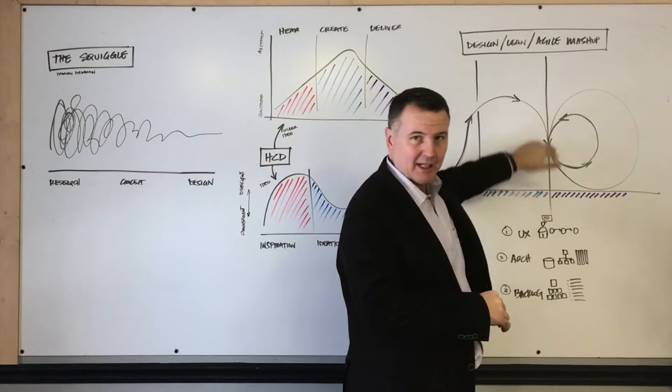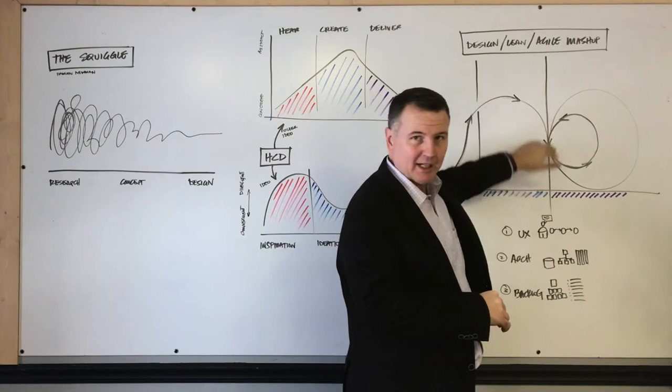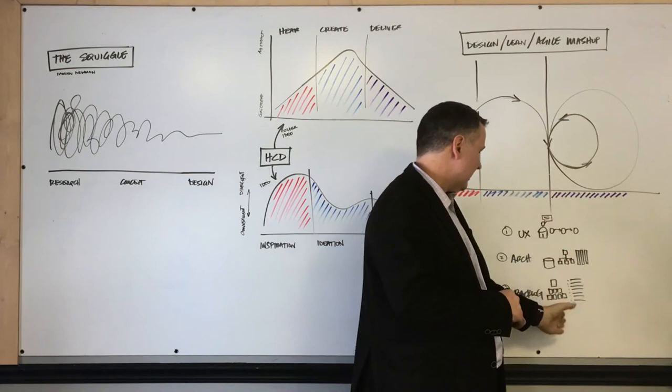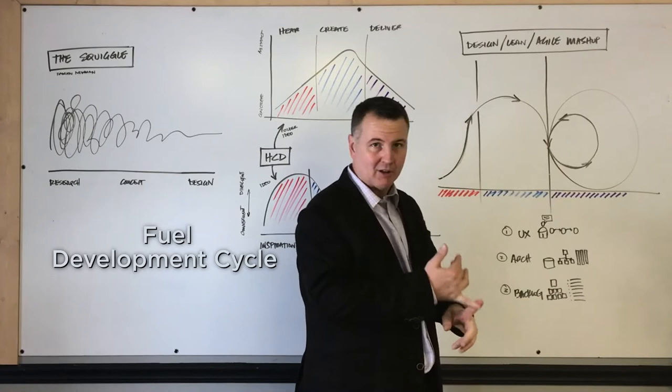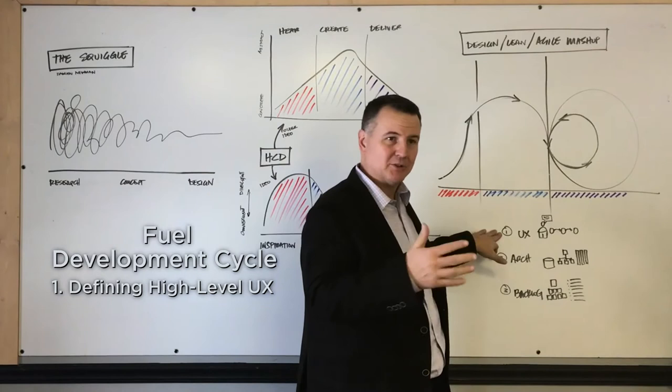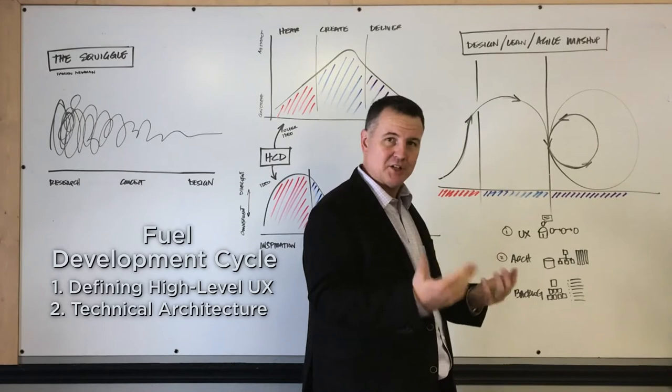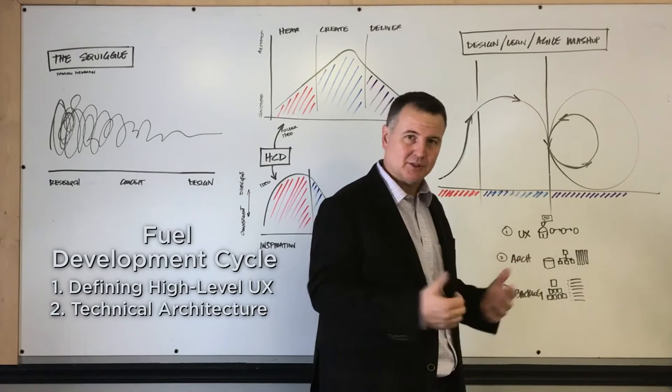It's at this point, here at OpenARC, this transition from understanding, defining problems, and generating conceptual solutions for them, and transitioning into actually building things, this is a point where we like to align and have things that fuel that development cycle. Those three main things are defining the high-level user experience, so not every last pixel-perfect design, but the patterns, the types of interactions, the flows, the information architecture, the technical architecture, so what's the technology stack, what are the integration points with existing systems, what's the plan to move from the current product to the next product, if some of those are considerations.